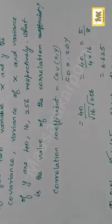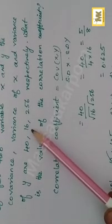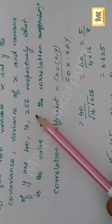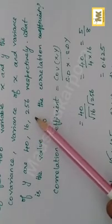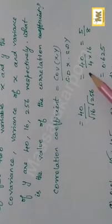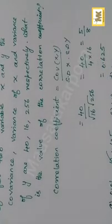We know the variance, so take the root of 16, which gives standard deviation of x = 4. The root of 256 is 16, the standard deviation of y. So 40 divided by (4 × 16) = 40/64 = 5/8, that is 0.625. Option B is correct.